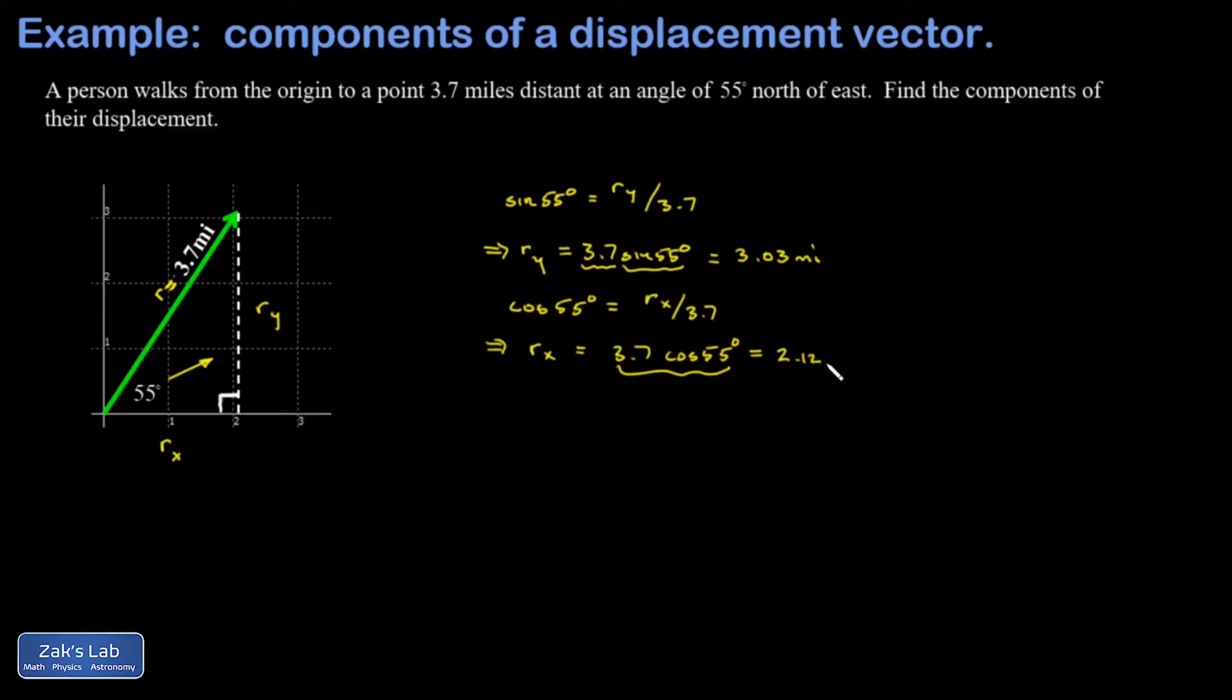So this means the person could get to the exact same location by starting at the origin, walking 2.12 miles east, then turning north and walking an additional 3.03 miles.